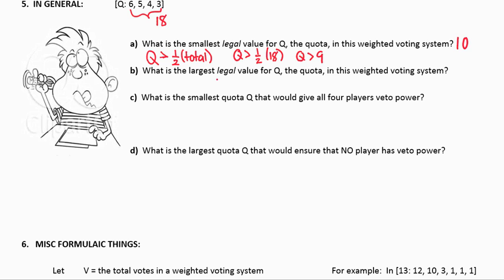What is the largest legal quota for Q? The largest legal quota would be the total itself. You're not allowed to have a quota that's bigger than a unanimous vote, so the largest legal quota would be 18. So any quota between 10 and 18 would be considered to be a valid quota. Any quota that's 9 or less would be too small, and any quota that is 19 or more would be too big.